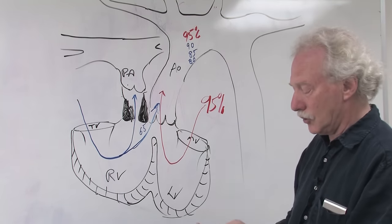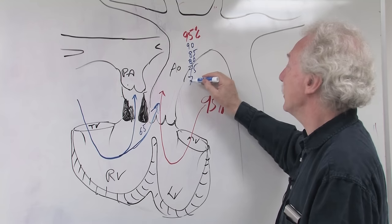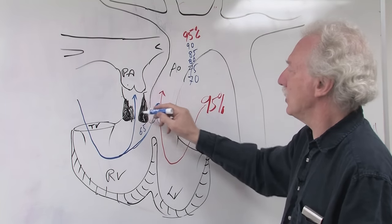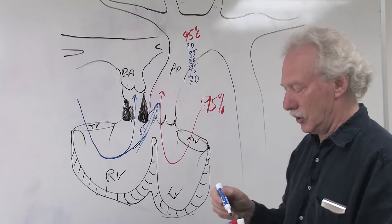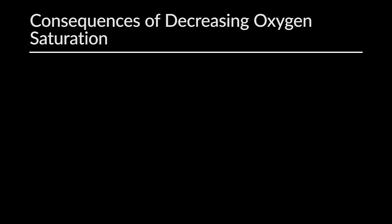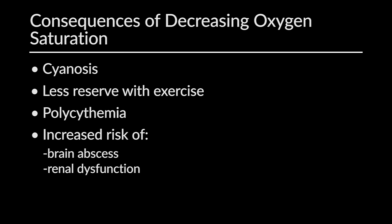What happens when the oxygen saturation gets lower and lower? As there's increasing obstruction, the oxygen saturation is getting lower and you will be cyanotic. You will have less reserve with exercise and can develop all kinds of physiologic consequences. You'll get polycythemic. As a result, you are at risk for brain abscesses, kidney problems, and all of that.